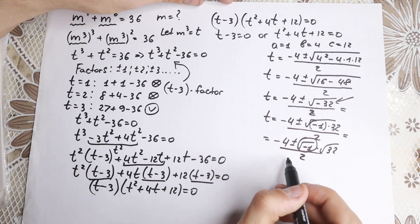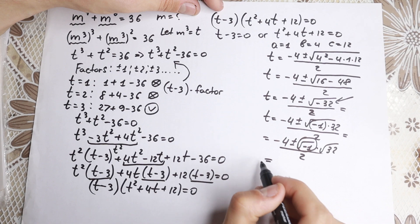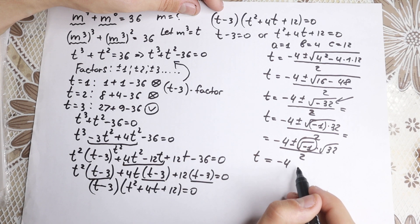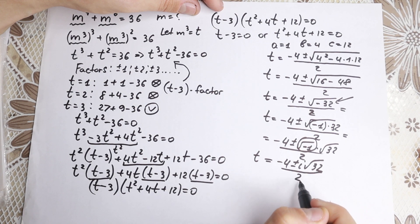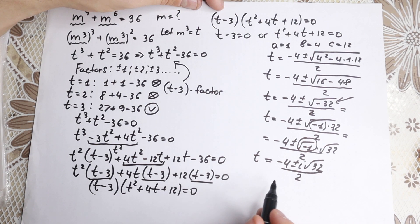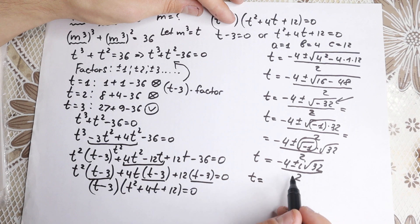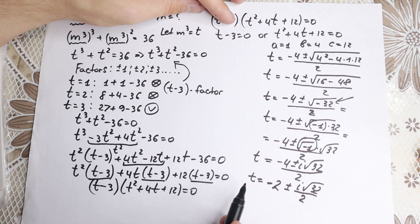The square root of negative one is our imaginary unit i. So t equals minus 4 plus or minus i times the square root of 32, all over 2. Simplifying by dividing through by 2: t equals minus 2 plus or minus i times the square root of 32 over 2. These are complex roots.